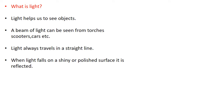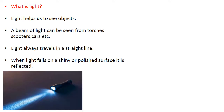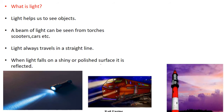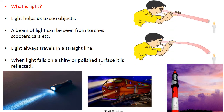So what is light? Light helps us to see objects. A beam of light can be seen from torches, scooters, cars, and vehicles. Light always travels in a straight line. You can see in the first and the second picture, the boy is using two kinds of pipes — one is a straight pipe and one is a bent pipe to see the candle.